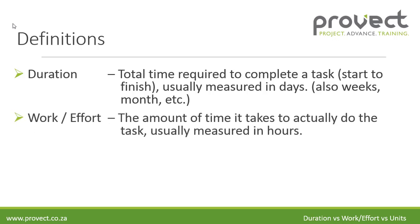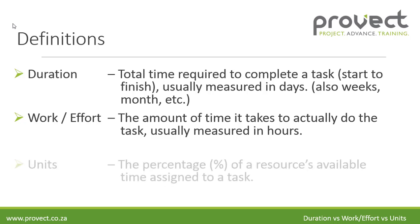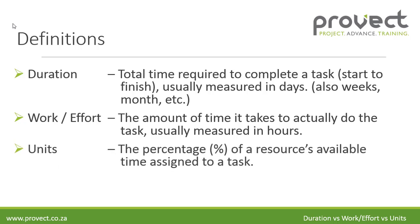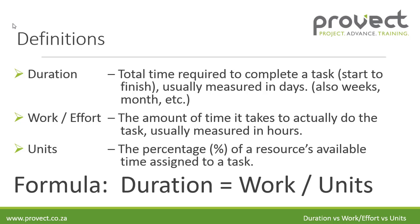Work, or effort, is the amount of time it takes to actually do the task, and it is usually measured in hours. Units is the percentage of a resource's available time assigned to a task. The formula used in project scheduling is: duration equals work divided by units.